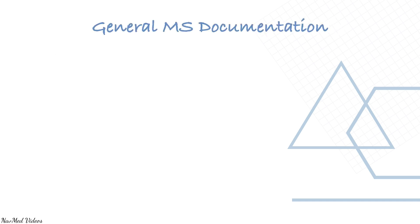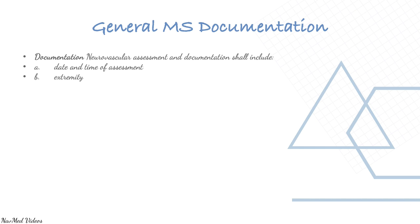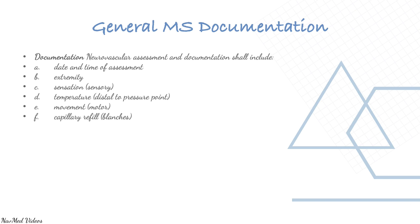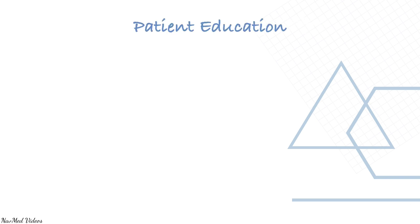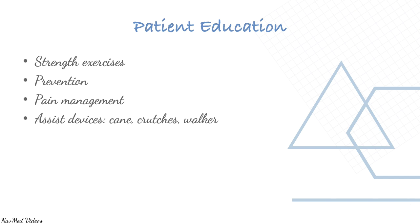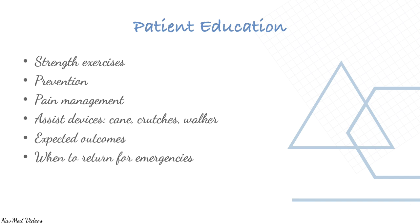General musculoskeletal documentation for neurovascular assessment includes: date and time, extremity, sensation, temperature, movement, capillary refill, pulses, and color, plus any other pertinent observations such as swelling — always report any changes. Patient education covers strength exercises, prevention, pain management, assistive devices such as cane, crutches, or walker, expected outcomes, and when to return for emergencies.